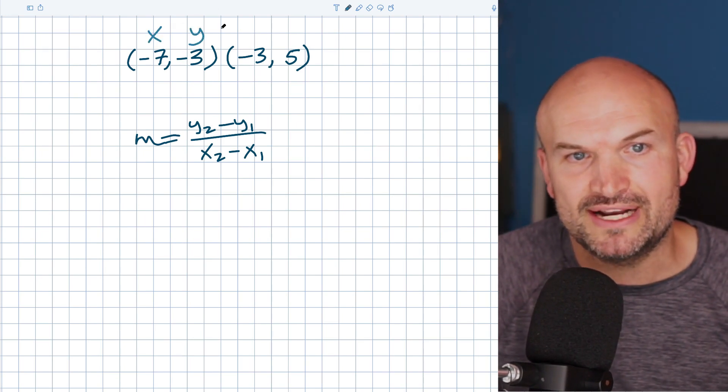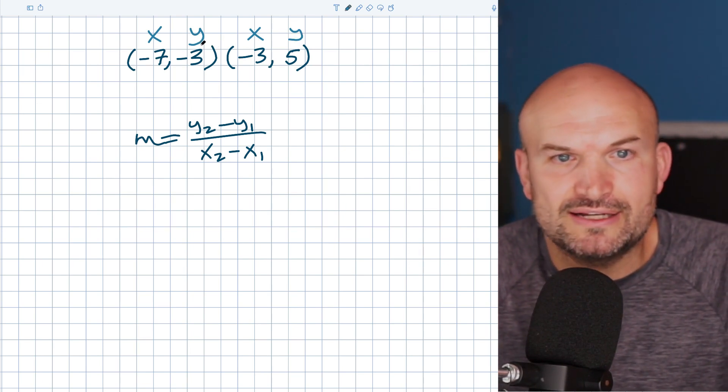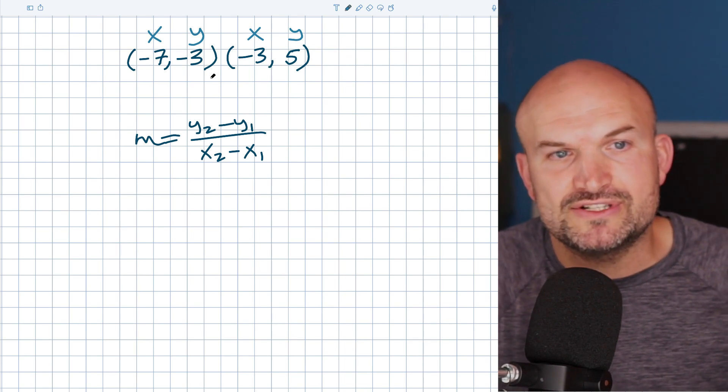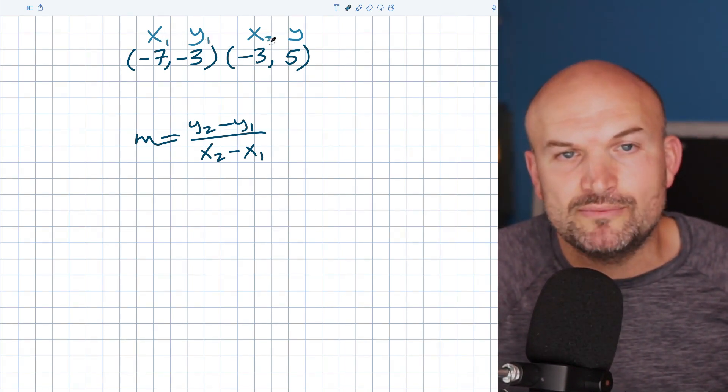So let's label our coordinate points. We have an X, Y coordinate here and we have an X, Y coordinate here. Unless there's some problems that's easier to subtract one way or another, I always just like to make the first point, the one furthest to the left, X1, Y1, and the second point X2, Y2.